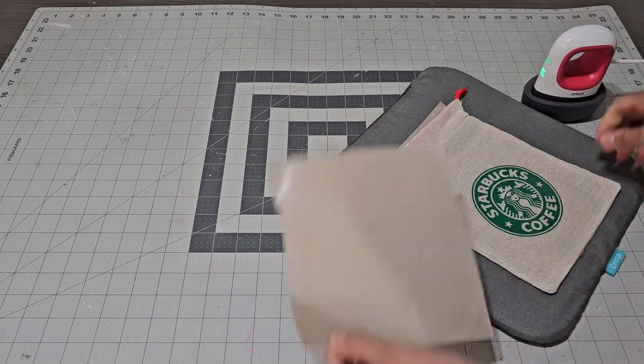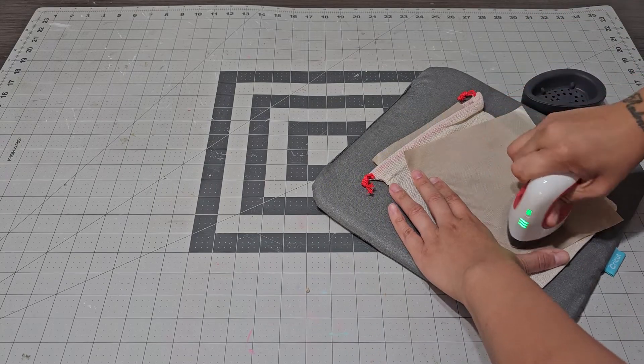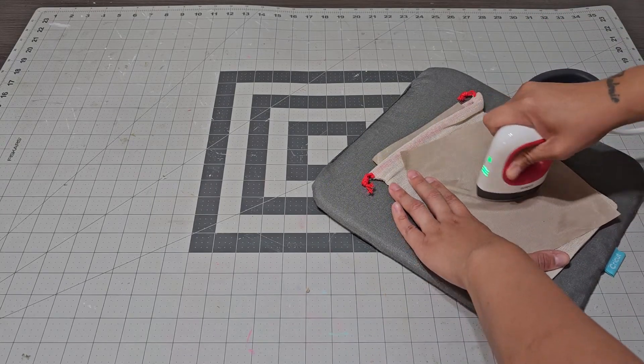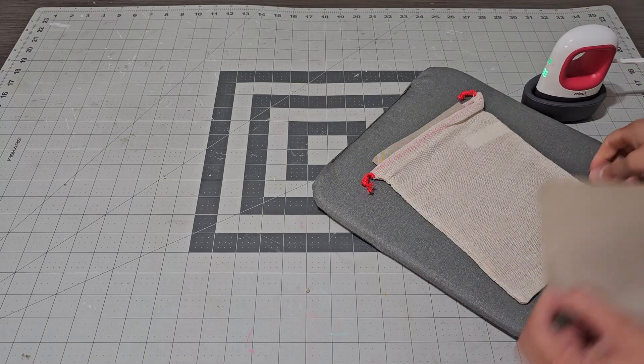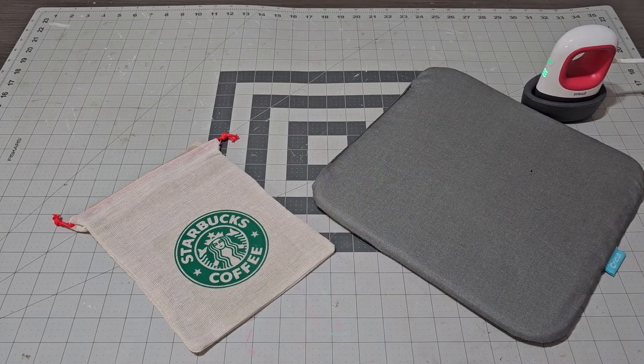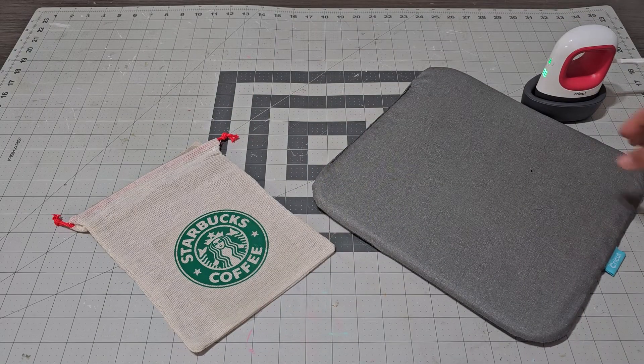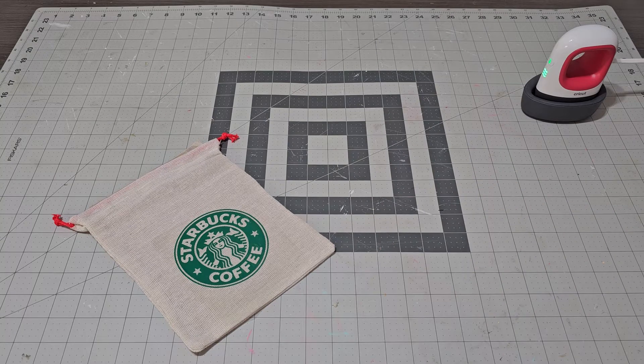Once you're done pressing it, what you're gonna do is you're gonna flip it and press it for another 15 seconds. That's what the heat guide says, that's what we're gonna do. We're gonna flip it around and we're gonna let that dry, and it says let it dry to a cool touch, so that's exactly what I'm gonna do.